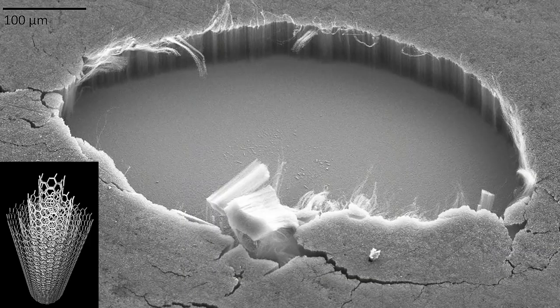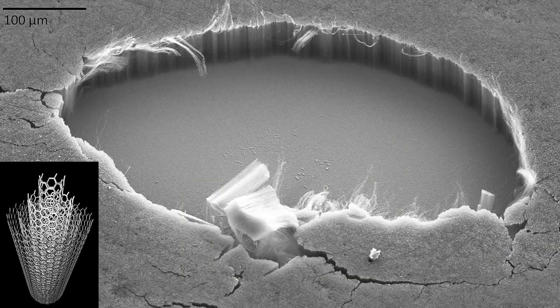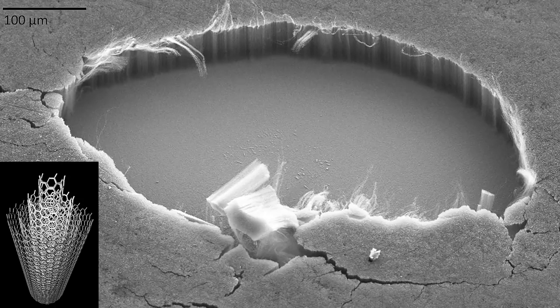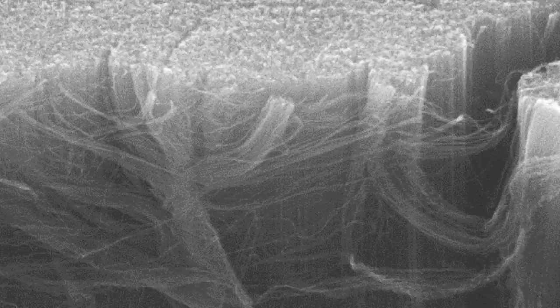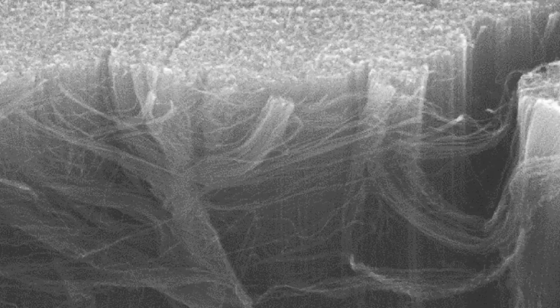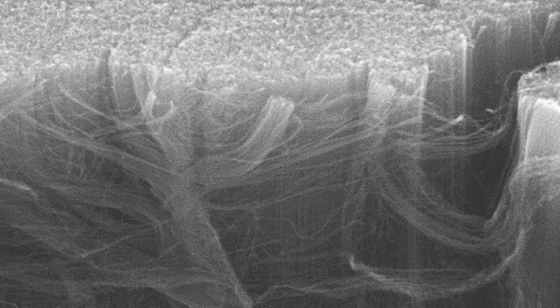The material is able to get so dark thanks to tiny carbon nanotubes that are roughly 3500 times smaller than a human hair. A surface area of 1cm squared would contain around 1000 million nanotubes, and when light hits the tubes, it's absorbed and cannot escape.